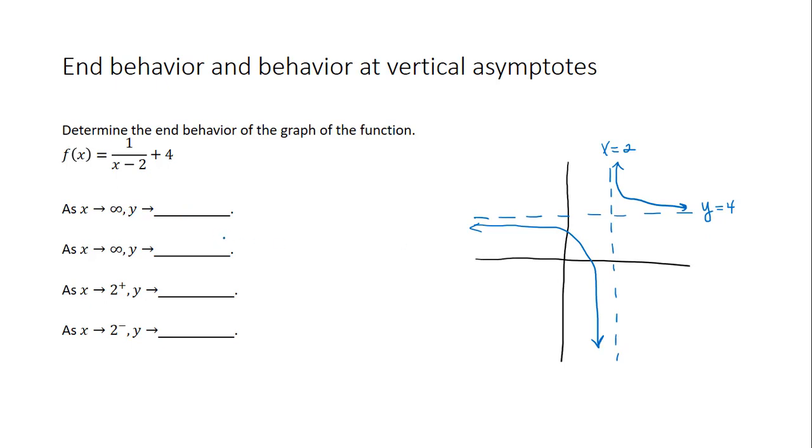Well, remember that as x goes to infinity, that's what's happening on the right end of the graph. So on the right end of the graph, notice that the y value is approaching this horizontal line, which is y equals 4.